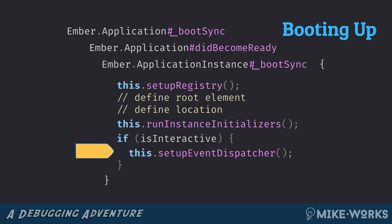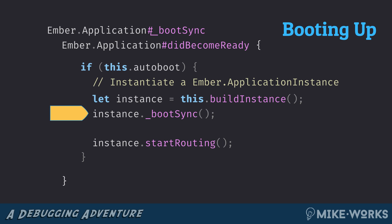If we're running on the client and we need to listen for clicks and stuff, we will set up our global event dispatcher. At this point we're done with the boot sync method — we've basically booted the application instance. The final thing that happens here is we begin routing: we start our first transition and get the router to pick up managing URL-based application state.